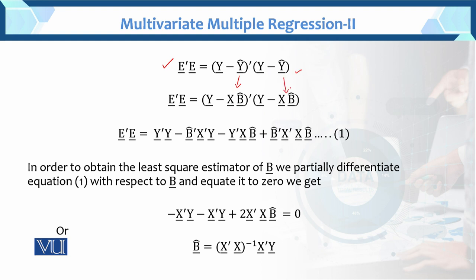Similarly, here we substitute the value of y-hat as x·b-hat. Now for the multiplication: we have two terms to multiply. There is a transpose involved, so y'y comes first. For the cross terms, the transpose gives b-hat' first, then x', then y. Similarly multiplying y by the other term gives y'·x·b-hat. And the last term, minus times minus equals plus, giving b-hat'·x'·x·b-hat. This is equation number one.